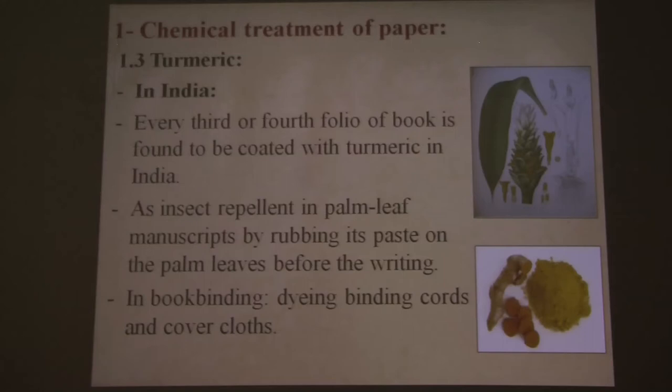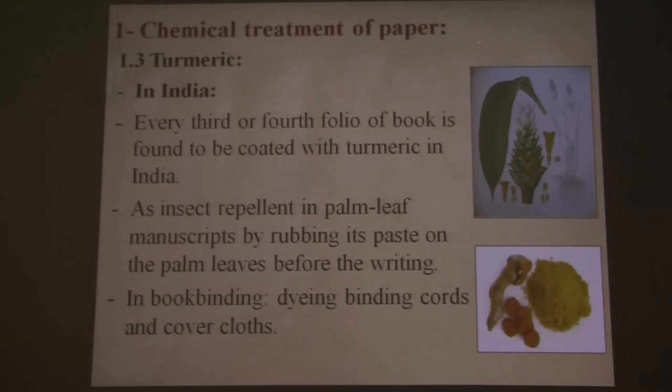The third material is turmeric, which had been used in India. In a specific part of India, they usually dye every three or four folios of a manuscript or book with turmeric. This material has insect repellent activity and has also been used during the bookbinding process by dyeing the cords and cover cloth as well.